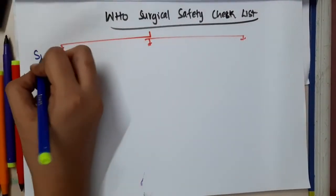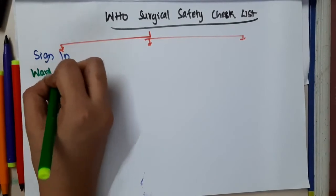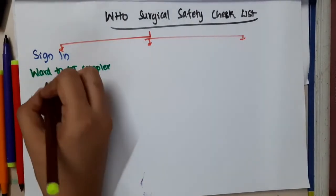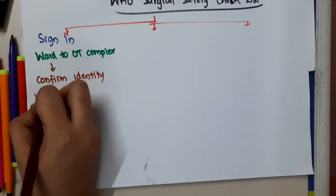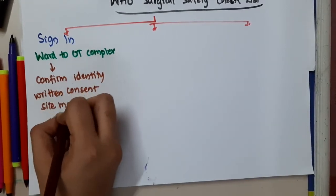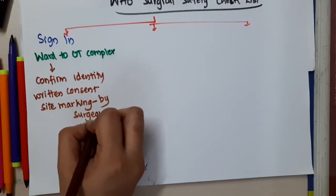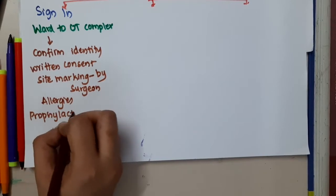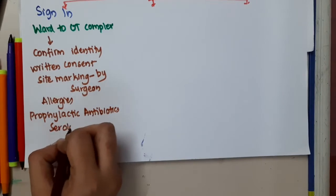The first component is Sign In. Sign In is done when the patient is taken from the ward to the OT complex. Here you confirm the identity of the patient, take informed consent, mark the surgical site (which is done by the surgeon), check for any allergies, check if prophylactic antibiotics are required, and ensure serology is done.